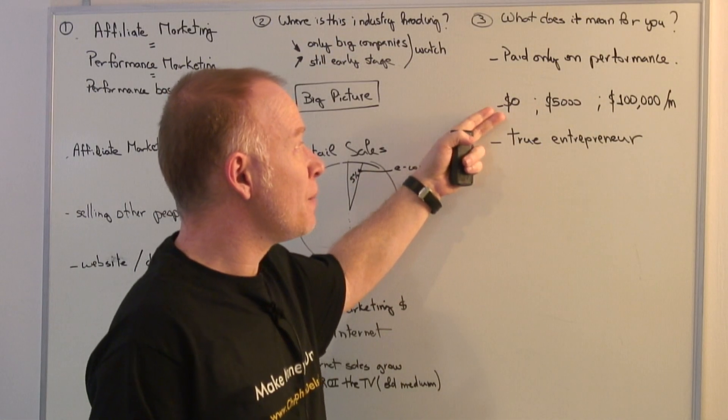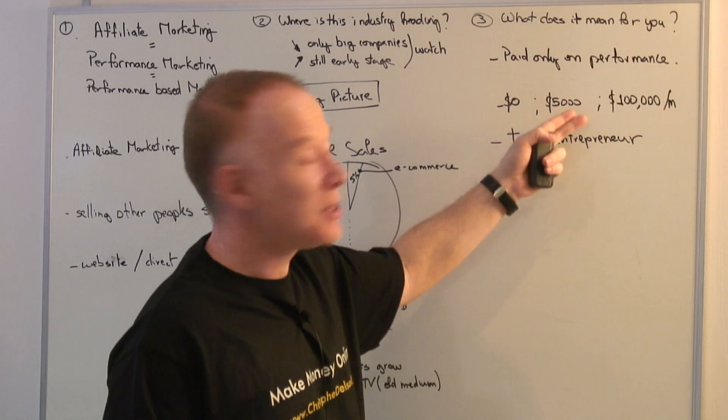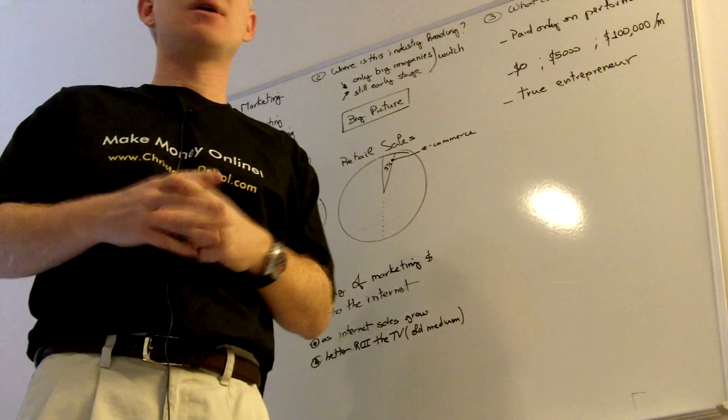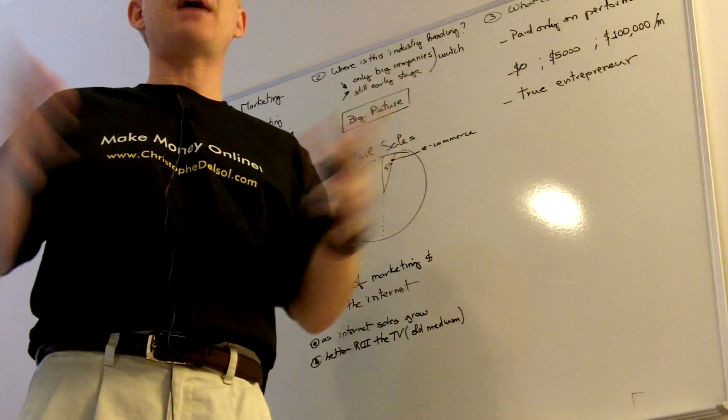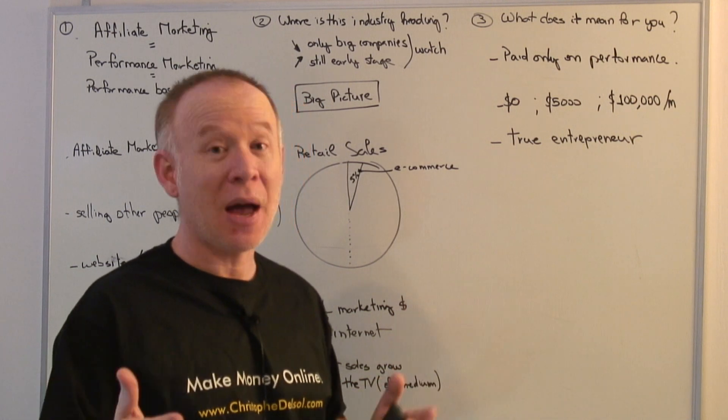Affiliate entrepreneurs can make zero, you can make thousands, five thousand, ten thousand, and some top-performing affiliates make $100,000 a month, and literally some make more than that. Will you be the next affiliate making $100,000 a month?